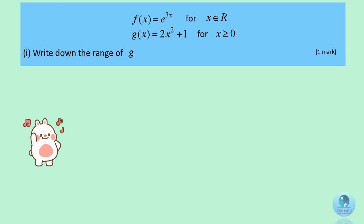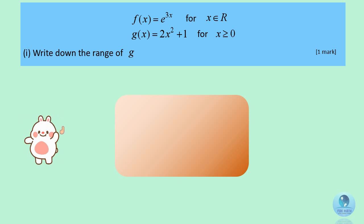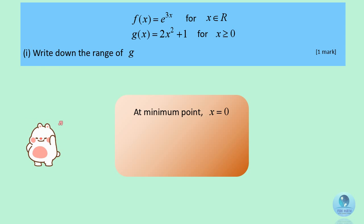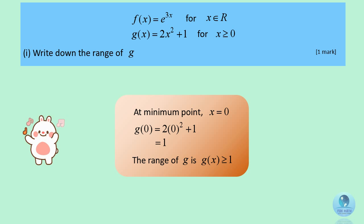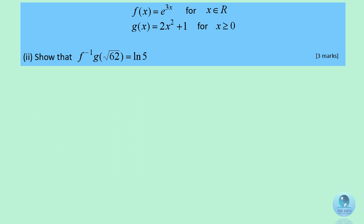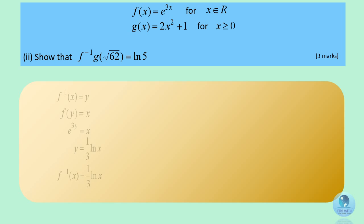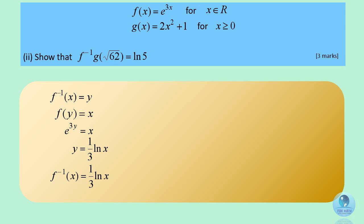The function g is a quadratic equation with its minimum point on the y-axis. Substituting x equals 0 into the function gives 1, so the range for function g is greater or equal to 1. To answer the next question, find the inverse function of f, which is 1 over 3 times the natural log of x.